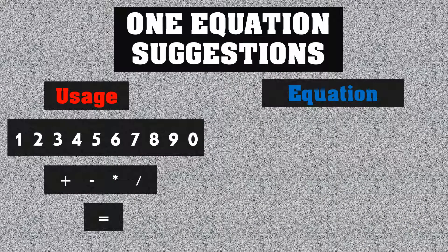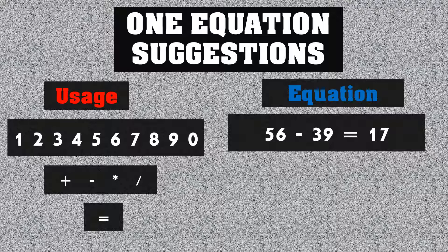First off, if you are starting with a single equation, I have a suggestion. Cover as many unique entries, numbers, and operations as you can. Here's an example of something you could do where you cover six unique numbers, one operation, and the equal sign. That is pretty good coverage for a single equation.